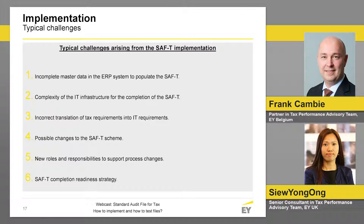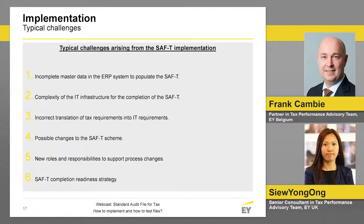There's another variant where within one legal entity, multiple ERP systems are being used. You might have a different purchasing solution than what the sales organization uses for their sales orders. That also adds complexity. It's important to make a clear decision: how do we want to approach it, at which level do we want to create the SAF-T, where will we get the data, and what is going to be our strategy?